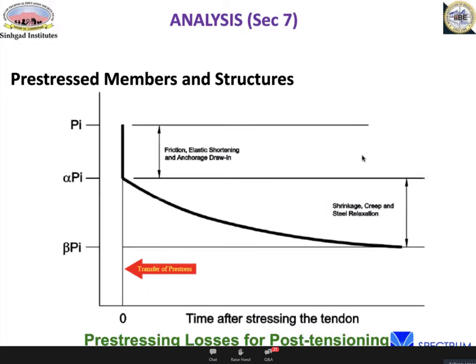The same applies for post-tensioning. In post-tensioning, friction between the strand and the plastic or metal duct causes friction losses. For a single cable there is no elastic shortening loss, but for multiple cables there are elastic shortening losses. Anchorage slip losses occur when the wedges are engaged. After these initial short-term losses, there are long-term losses due to creep, shrinkage, and relaxation — all described in the analysis chapter.